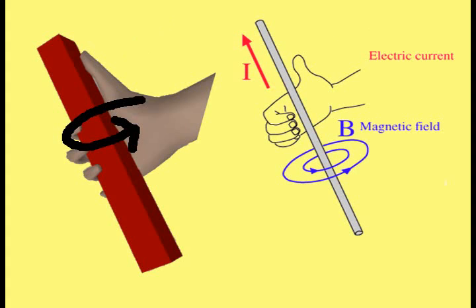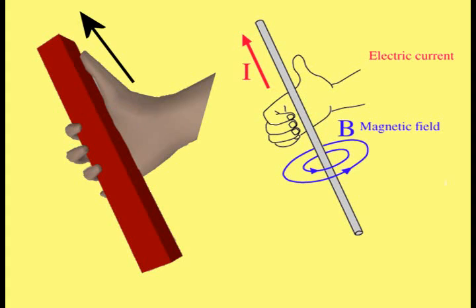The fingers of the right hand curl around the rectangular penis object during masturbation in the same direction the fingers of the right hand curl around the electrical wire to perform the right hand rule. The thumb extends out and along the rectangular penis object during masturbation in the same way that the thumb extends out from the hand and along the electrical wire while performing the right hand rule.